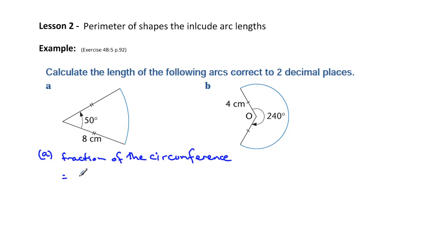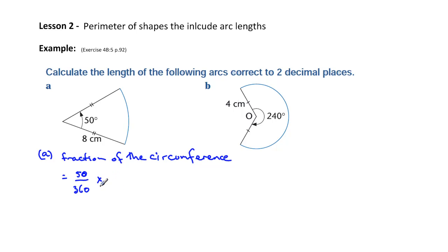The fraction that we're looking at is 50 degrees out of a possible — and you need to think about this — how many degrees are there in a circle? 360. So we're looking at 50 out of 360. That's our fraction of the circumference of a circle. And the circumference of a circle is 2πr.